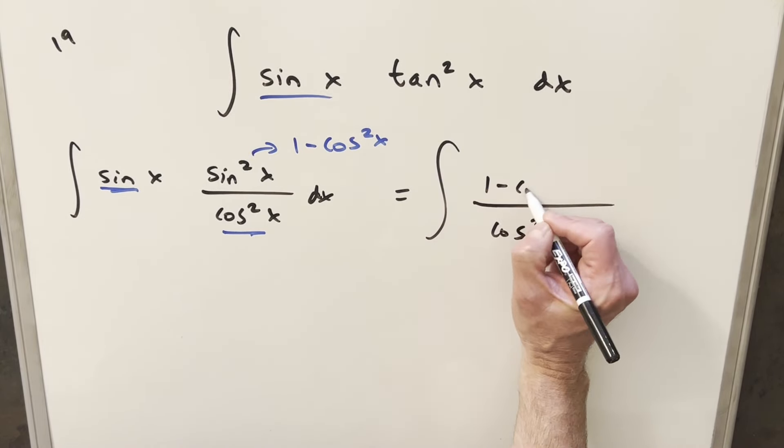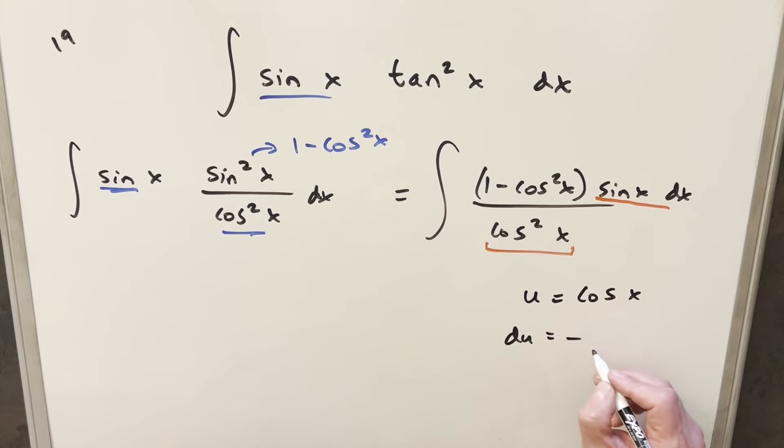Same thing with cosecant, you want cotangent. So in this case, I think what I want to do is rewrite it. I want to get everything in terms of sines and cosines, so we'll just copy down sine x. Tan x is sine over cosine, so we'll write this as sine squared x over cosine squared x.